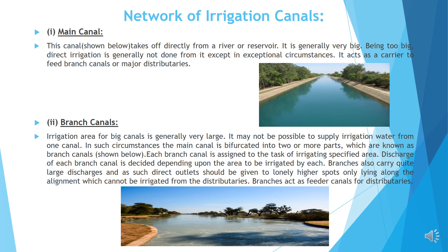Branch canals. The irrigation area for big canals is generally very large, and it may not be possible to supply irrigation water from one canal. In such circumstances, the main canal is bifurcated into two or more parts, which are known as branch canals, as shown below. Each branch canal is assigned the task of irrigating a specified area.